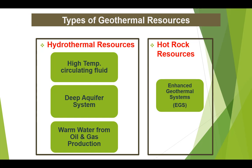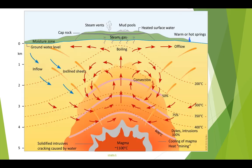There are two main geothermal resources. The first is hydrothermal resources, which allow us to utilise the heat from natural convective water. This resource is broken down into three sections: high temperature circulating fluid, deep aquifer systems, and warm water from oil and gas production.